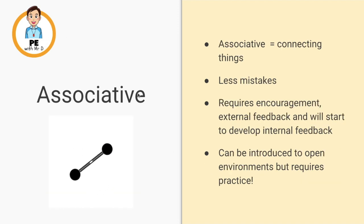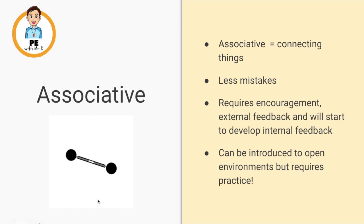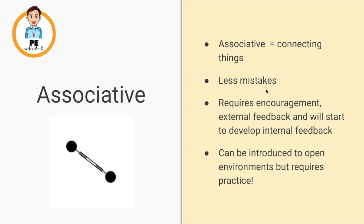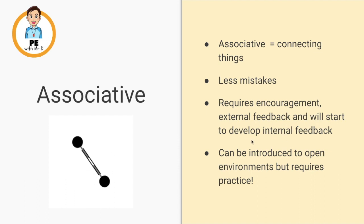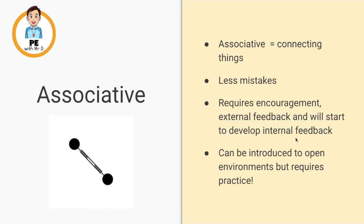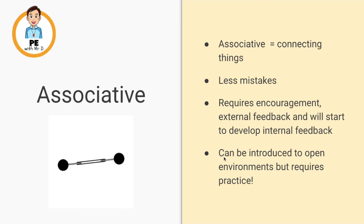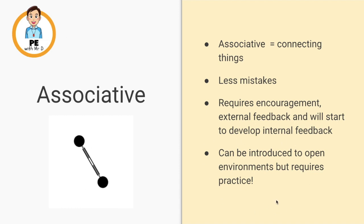Moving on to the associative stage. Associative means connection — connecting things or associating. This is all about connecting the dots and building that schema in our brains. We're going to need lots of practice and we'll start making fewer mistakes as the schema builds and we become better at the skill. This is the most important make-or-break stage. We require a lot of encouragement — either from ourselves through positive feedback, or from an external source such as a coach. As we practice, we transition from relying on external feedback to more and more internal feedback — figuring things out on our own based on the feel of the skill. We can start being introduced to open environments, but must still master the skill in a closed environment before moving to something like a game.